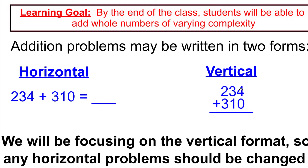When we're talking about adding place values, we actually mean add the two ones values. We'll do the vertical one first. We're going to add down the ones column and say 4 plus 0 is 4. Then the tens column: 3 plus 1 is also 4. And we add the hundreds column: 2 plus 3 is 5. So when we add 234 plus 310, we get 544.